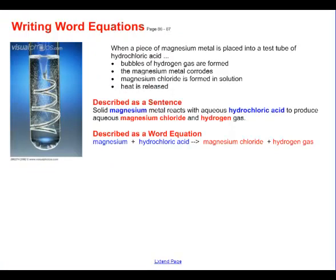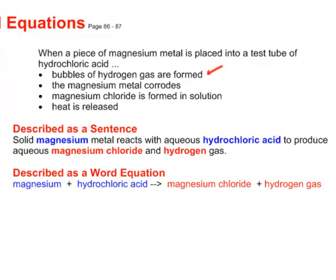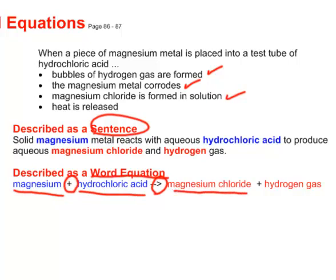We're going to look at writing word equations. If we put a piece of magnesium metal into a test tube of hydrochloric acid, we get bubbles, the magnesium metal corrodes, magnesium chloride is made in solution, and a lot of heat is released. In a sentence, we'd say: solid magnesium metal reacts with aqueous hydrochloric acid to produce aqueous magnesium chloride and hydrogen gas. In science, we simplify this as a word equation: magnesium plus hydrochloric acid produces magnesium chloride plus hydrogen gas. That saves a lot of words.